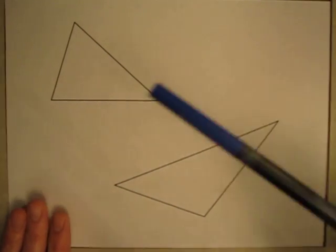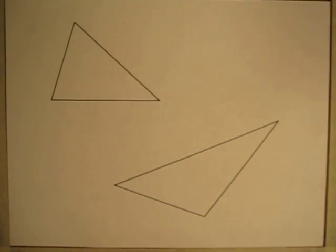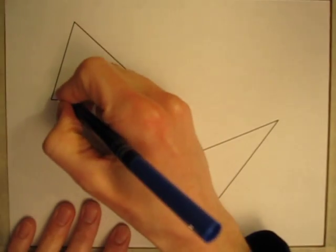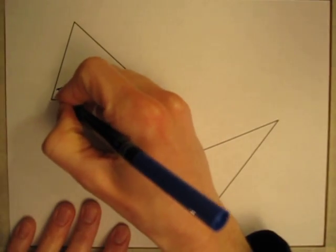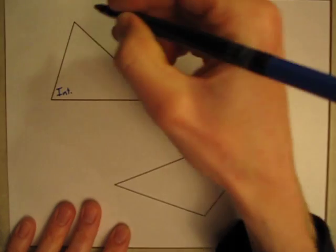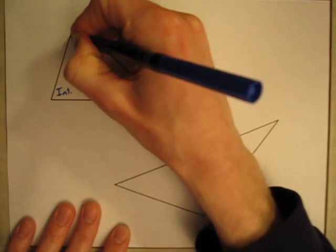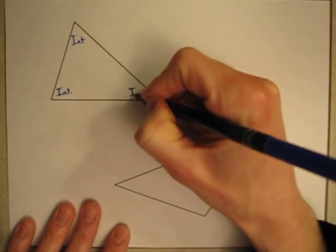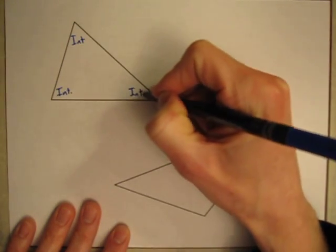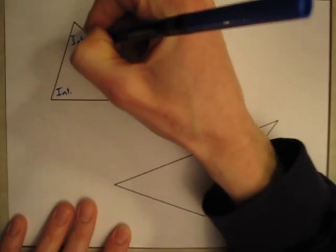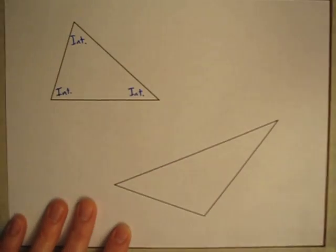We'll start looking at this triangle here. Of course, the triangle has three angles inside. The interior angles are there, there, and there. Those are our three interior angles.